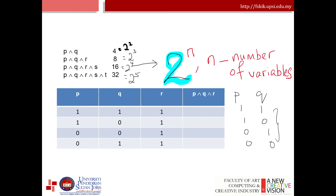For the number of rows in a truth table, with N variables you use 2 to the power of N. With variables P and Q (two variables), you get 2² = 4 rows. With P, Q, and R (three variables), 2³ = 8 rows. With four variables, 2⁴ = 16, and five variables gives 2⁵ = 32.